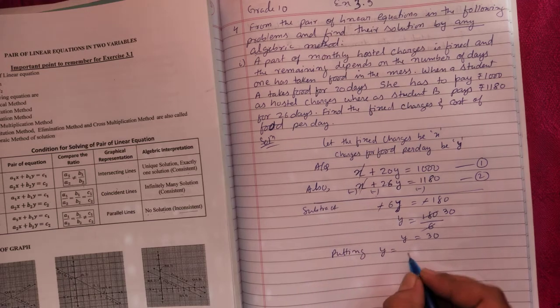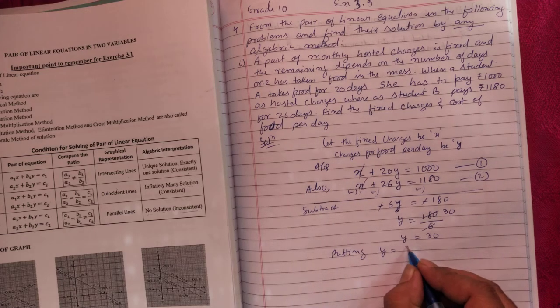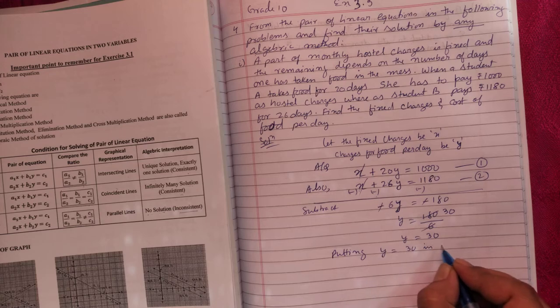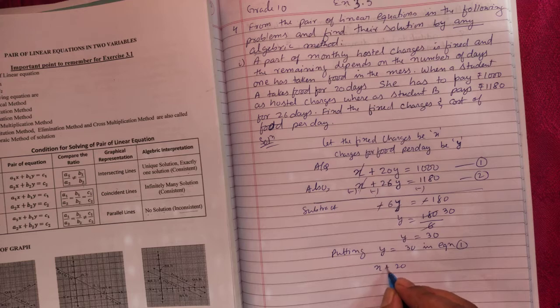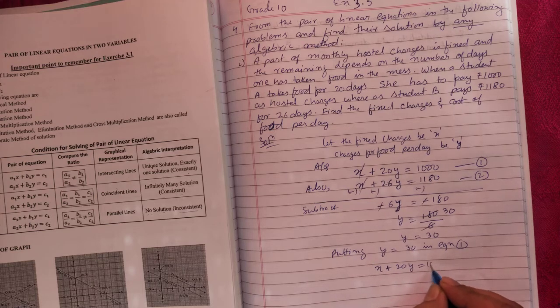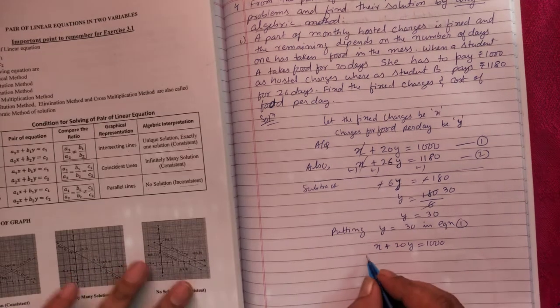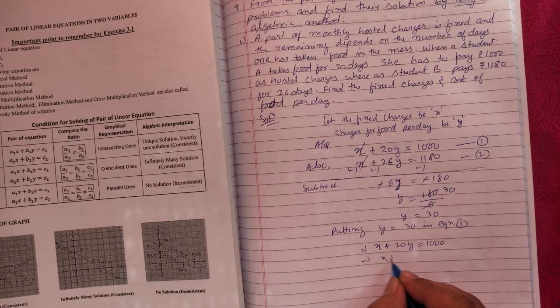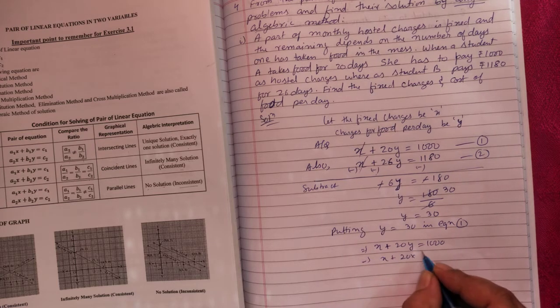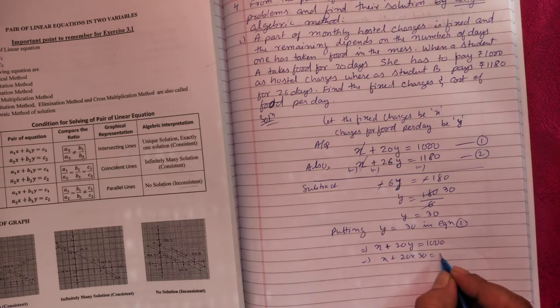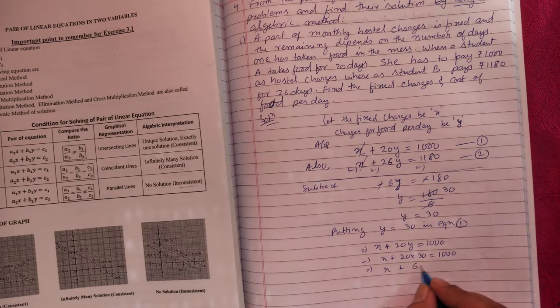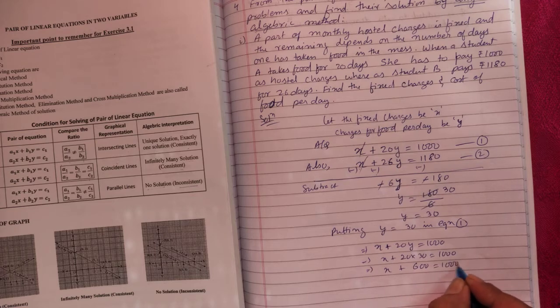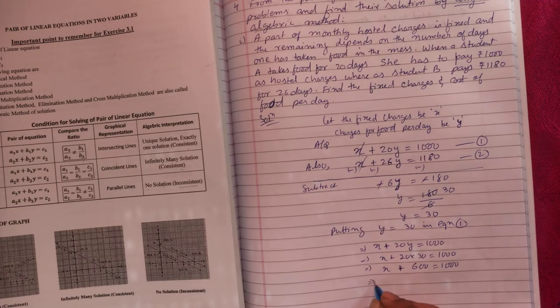Putting y equal to 30 in any equation. I'll just put in equation one: x plus 20y equals 1000. x plus 20 into 30 equals 1000. So x plus 600 equals 1000.